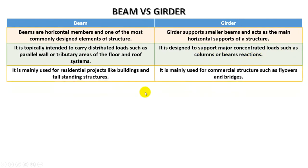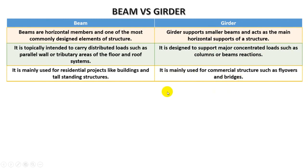Beams are mainly used for residential projects like buildings and tall standing structures, but girders are mainly used for commercial structures such as flyovers and bridges. In flyovers and bridges, long girders are used underneath the bridge span.